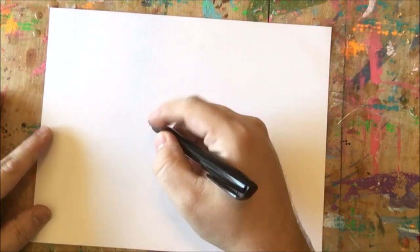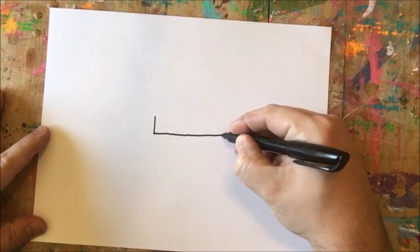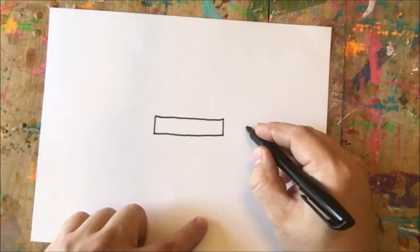I'm gonna start with my paper long or horizontal, and right in the middle of our paper I'm gonna draw three skinny rectangles. I'm gonna start with one here in the center and I'm gonna repeat that shape two more times.